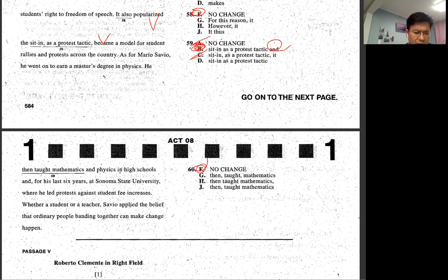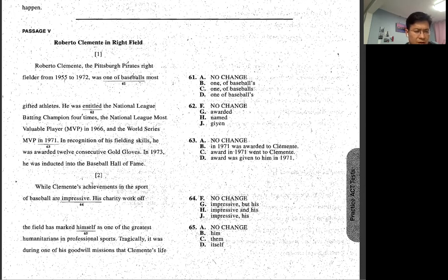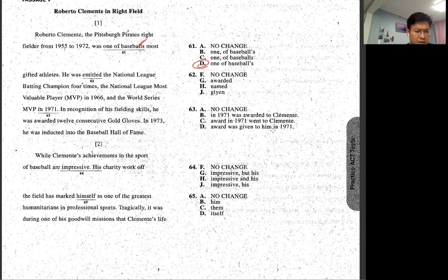Then taught mathematics. Then one of baseball's most gifted. One of baseball's most gifted. So baseball's with apostrophe. He entitled National League batting champion four times. Awarded, entitled, named, given. Name will be better. Like if you say entitled that sounds like you know you just say it's he's, you just got the title because you know he deserved. I mean it's like sounds like really arrogant in the way. Then World Series MVP 1971. 1971, nothing wrong with this.